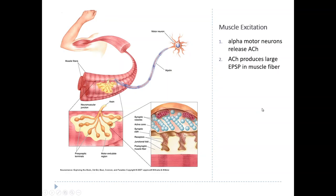The acetylcholine always produces a large EPSP — excitatory postsynaptic potential. That's because the surface of the postsynaptic muscle fiber has junctional folds, so the surface isn't smooth — it has lots of little grooves, and those grooves are packed with acetylcholine receptors. When acetylcholine is released from the presynaptic terminal, it floods these receptors. Because the folds increase the surface area, more acetylcholine receptors are activated, maximizing the chance for the largest possible EPSP.